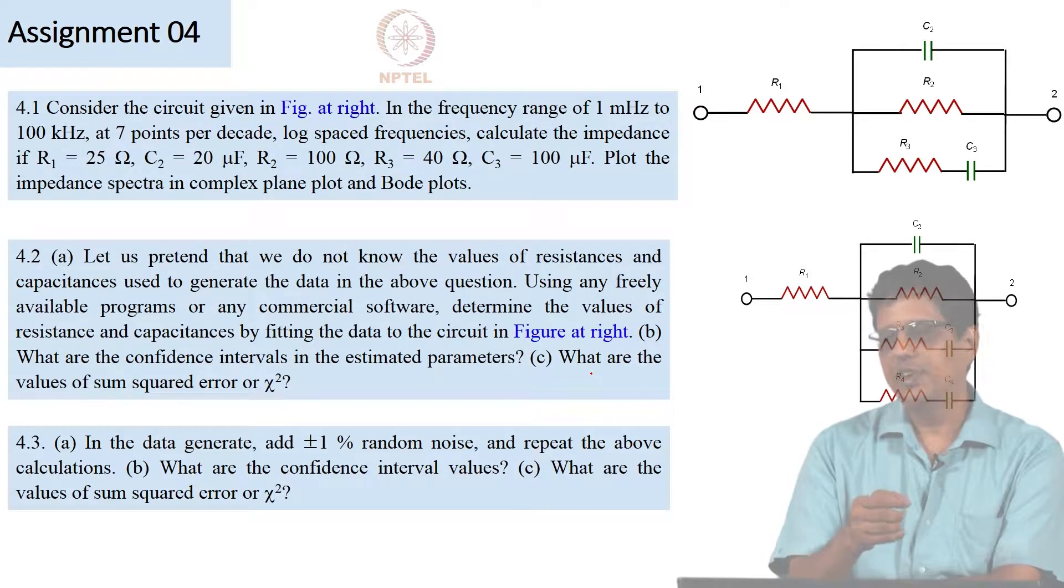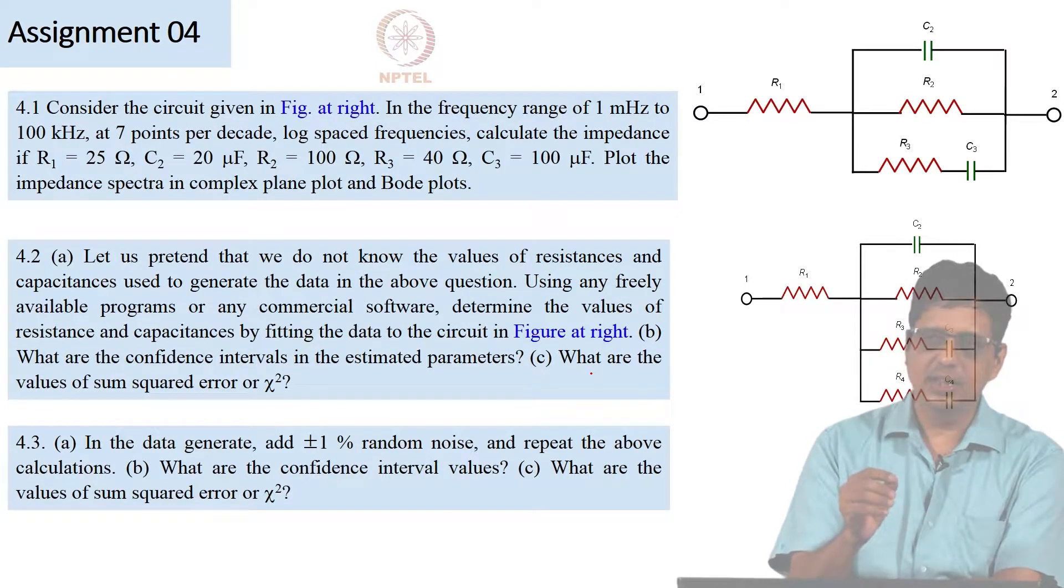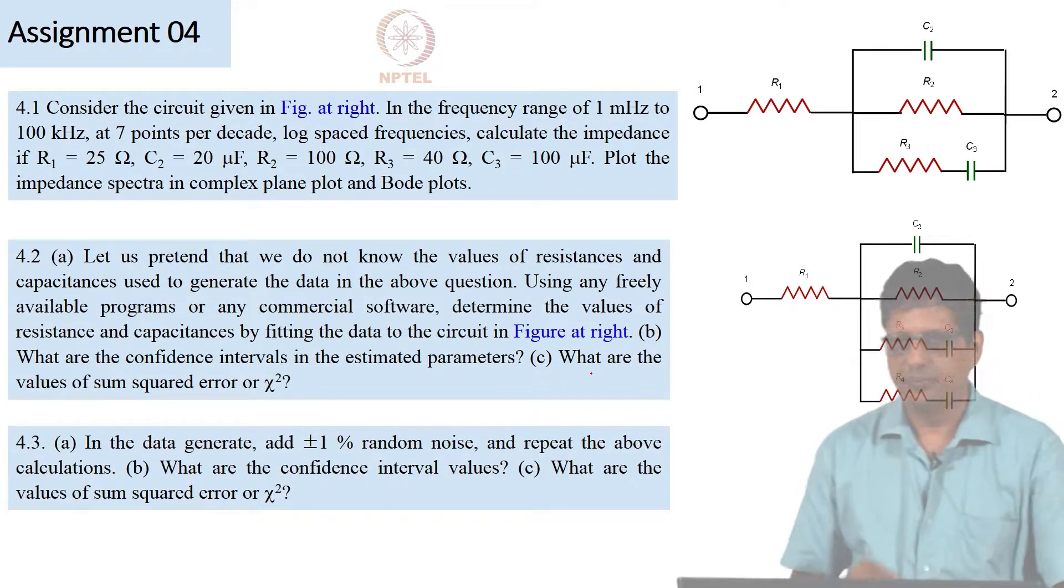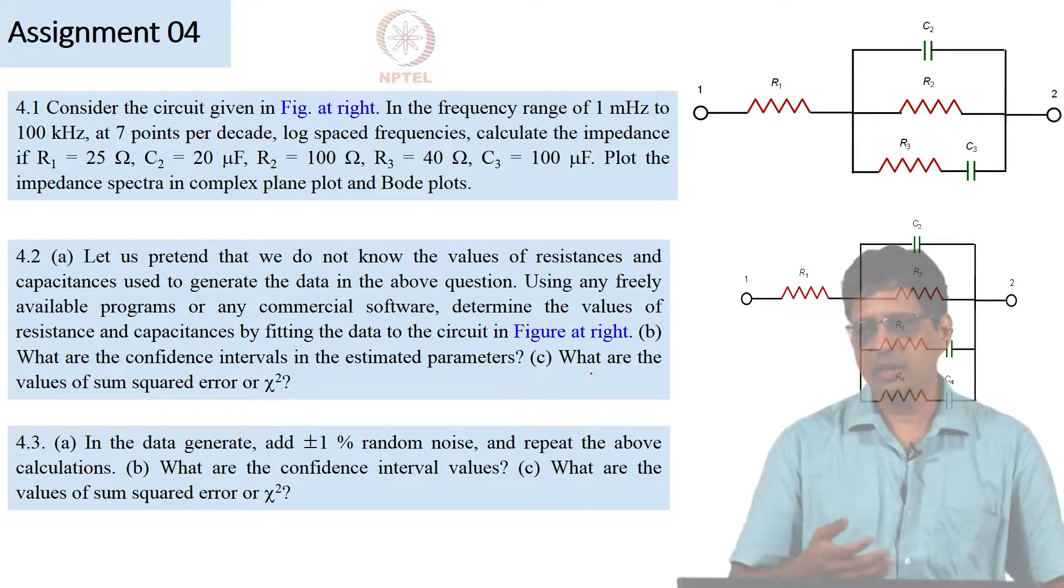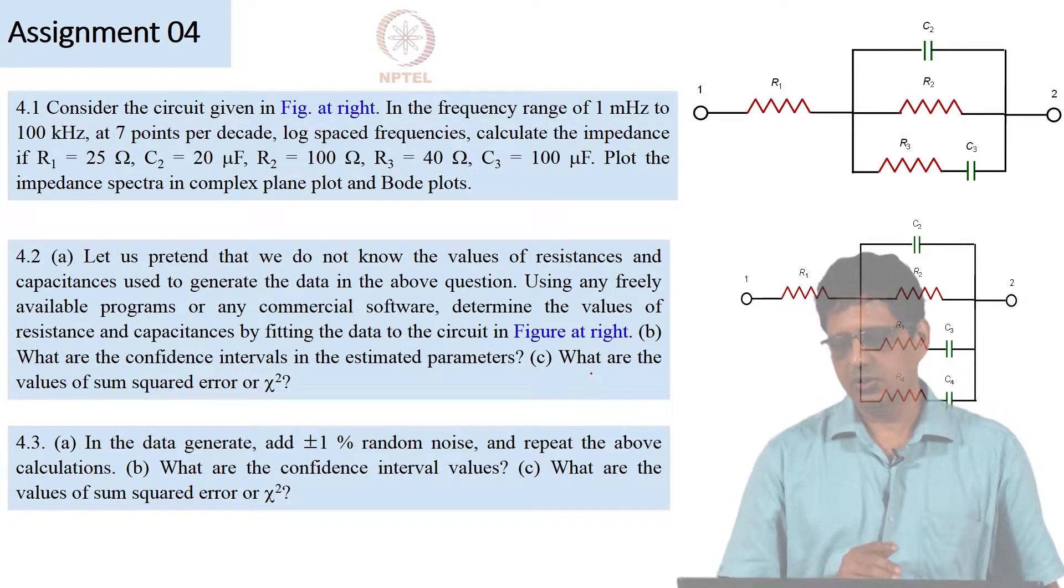Now if I add 1% random values or random noise to this data and redo this, I should actually get a confidence interval which is non-zero. That means it should be 25 ohm plus or minus 2 ohm or some such number. And similarly, the chi-square value should be a little high. If I include 2% noise, if I include 5% noise, it is going to be more. So you get an idea of what type of value should I expect from this.